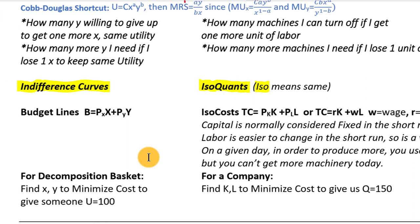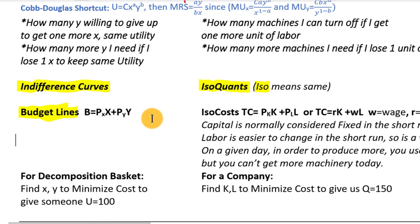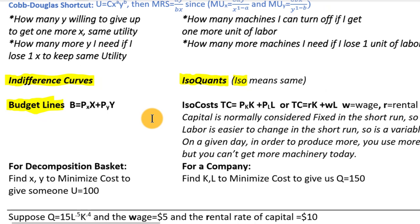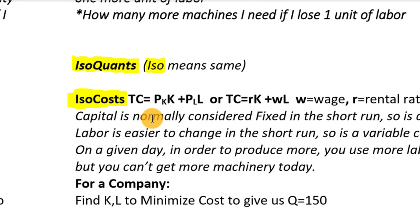The next piece from utility analysis was the budget line, which shows all the different ways we could spend a fixed budget. In production analysis, instead of a budget line, we call it an isocost line — again using the prefix 'iso.' An isocost is a line where all points cost the same amount, showing different combinations of labor and capital we could buy with the same total cost. Total cost equals the price of capital times capital plus the price of labor times labor.